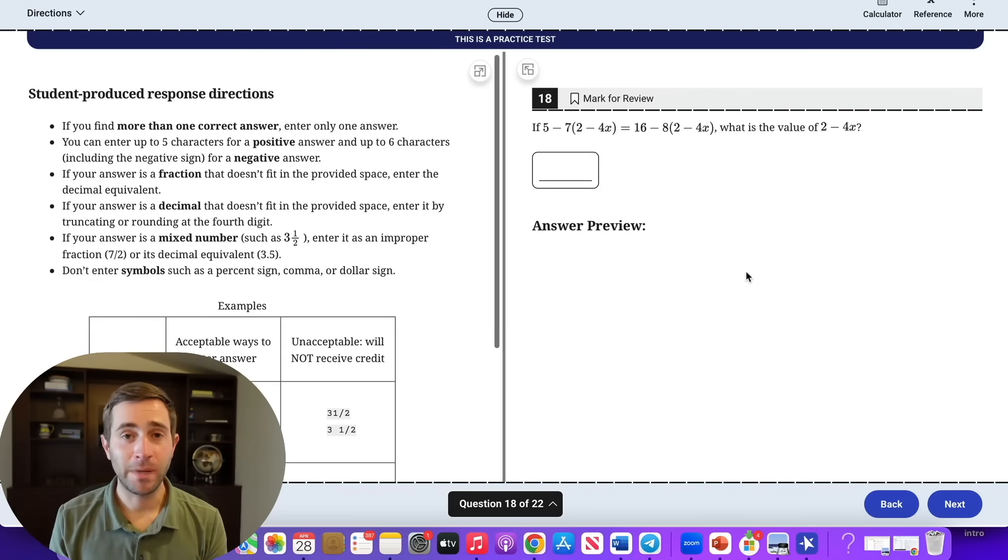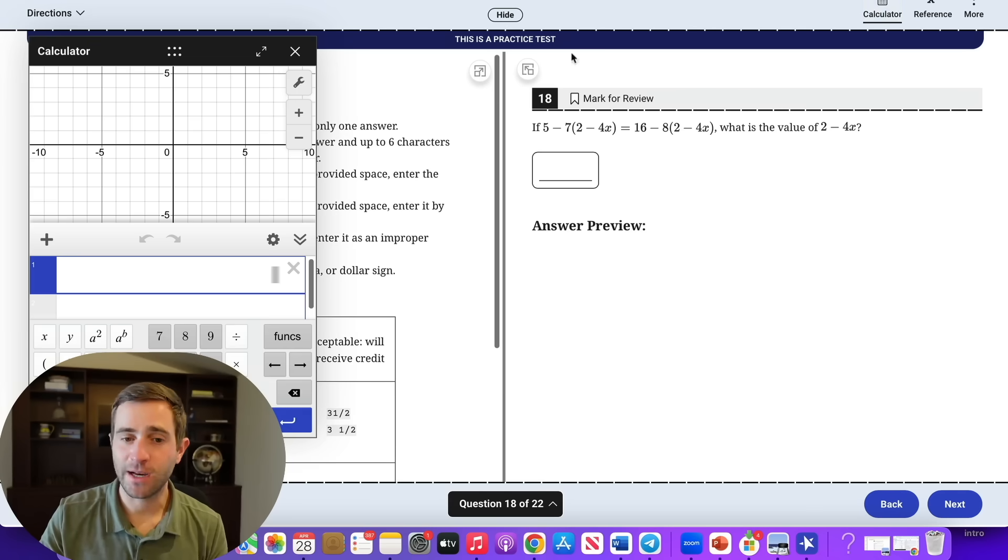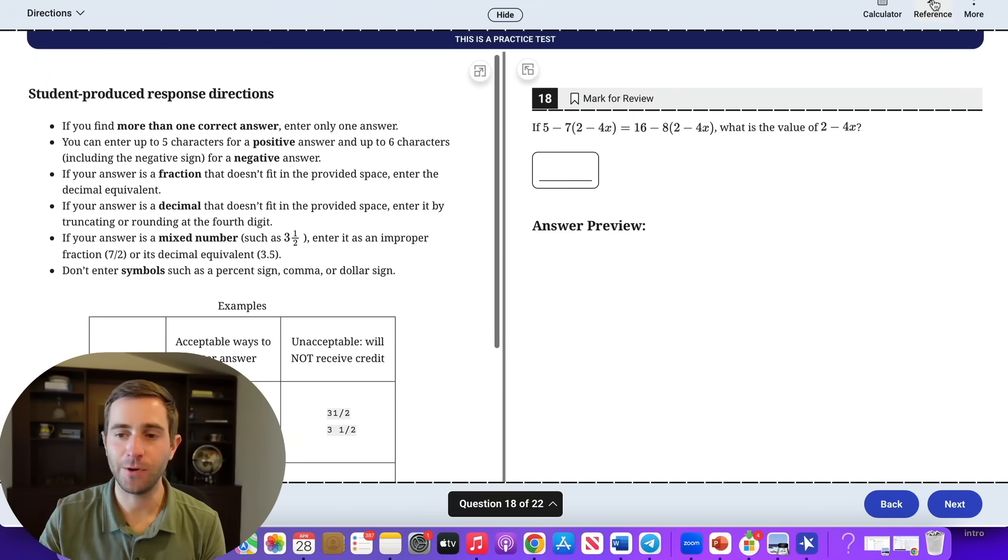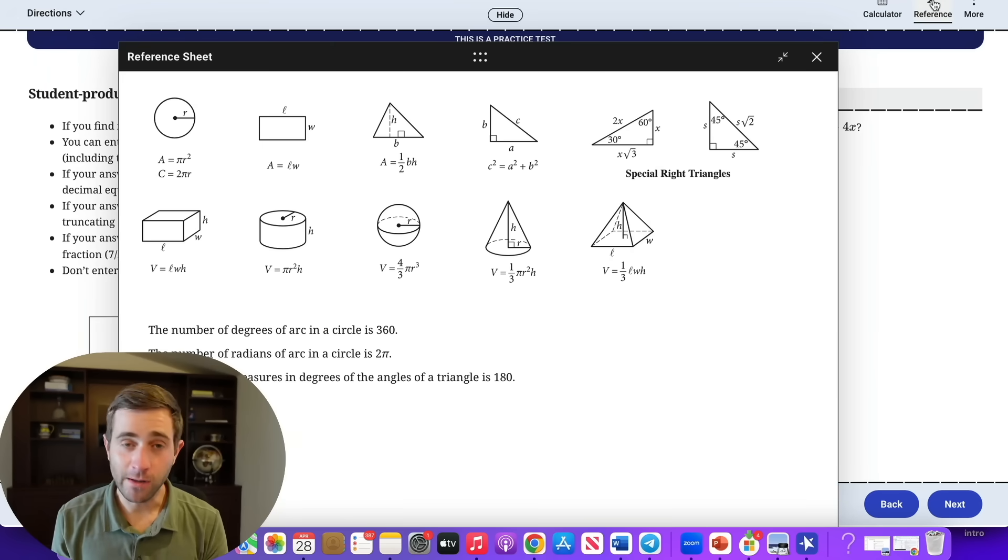Now our next test tip is make sure you know how the blue book actually works. And this mostly occurs in the math section. But if you want to get through your Desmos calculator, simply click calculator, you can minimize it or maximize it. And the other really simple one is be aware that there's a reference sheet with a ton of helpful formulas. If you've taken any blue book test, this may feel really basic, but a ton of students aren't familiar with this.